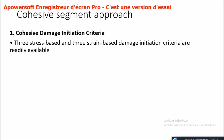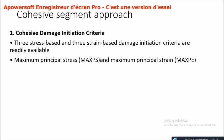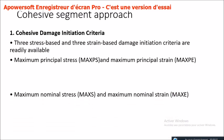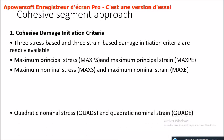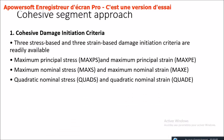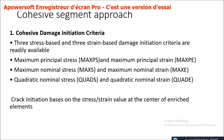For cohesive damage initiation criteria, three stress-based and three strain-based criteria are available: maximum principal stress (MAXPS) and maximum principal strain (MAXPE), maximum nominal stress (MAXES) and maximum nominal strain (MAXE), and quadratic nominal stress (QUADS) and quadratic nominal strain (QUADE). Crack initiation is based on the stress-strain value at the center of enriched elements.